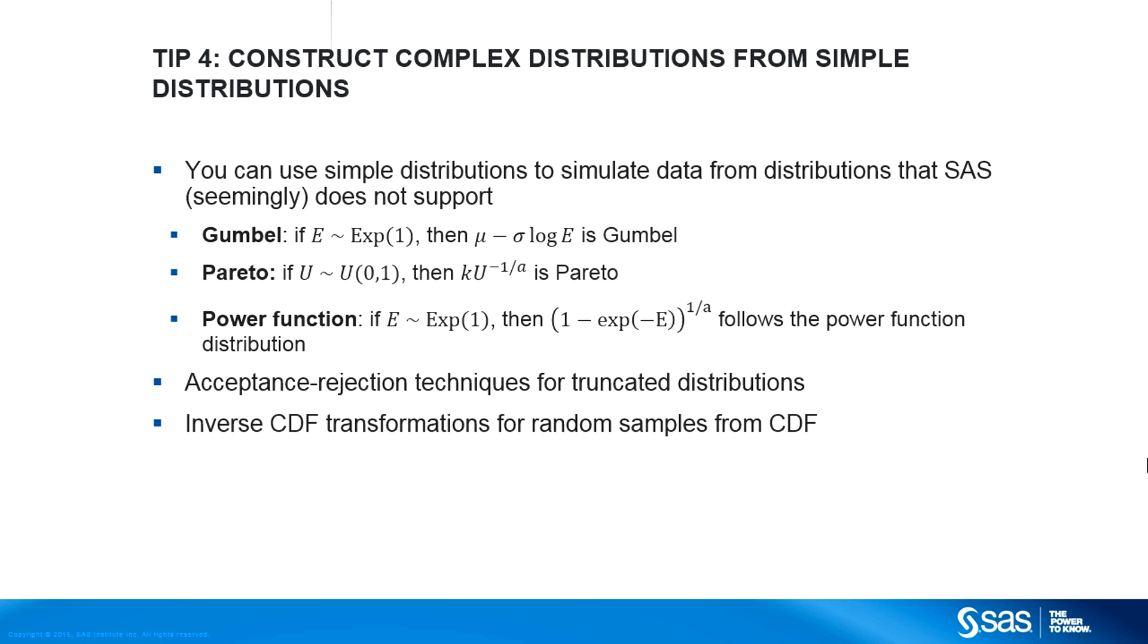Tip number four: construct complex distributions from simple ones. If you look in the SAS documentation, you might mistakenly conclude that SAS software supports only about 20 distributions. Not true. You can combine these simple distributions to generate mixtures of distributions, clustered data, and more exotic distributions. You can also write short programs that implement acceptance rejection algorithms for truncated distributions, or a program that simulates from any cumulative distribution function.